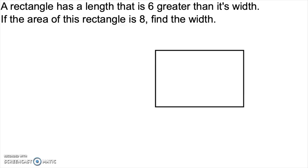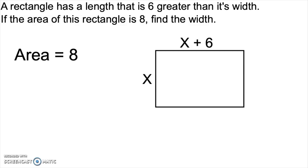Here's the rectangle. If the length is 6 greater than its width, we can label that x and x plus 6, and we know that the area of the rectangle is 8. Now let's just focus on the picture and think about what we can do to manipulate this. The first thing we want to do is notice that there's a square inside of that rectangle. Let's separate the square and the rectangle. So we have a square that is x by x, and we have a rectangle on the side of it that is 6 by x.